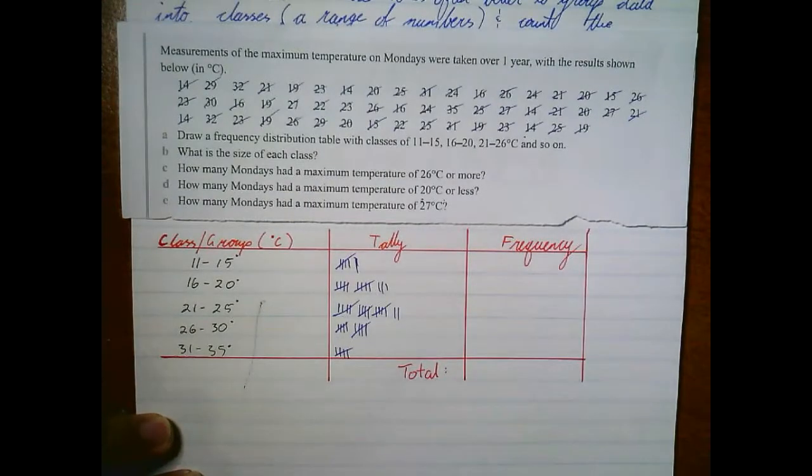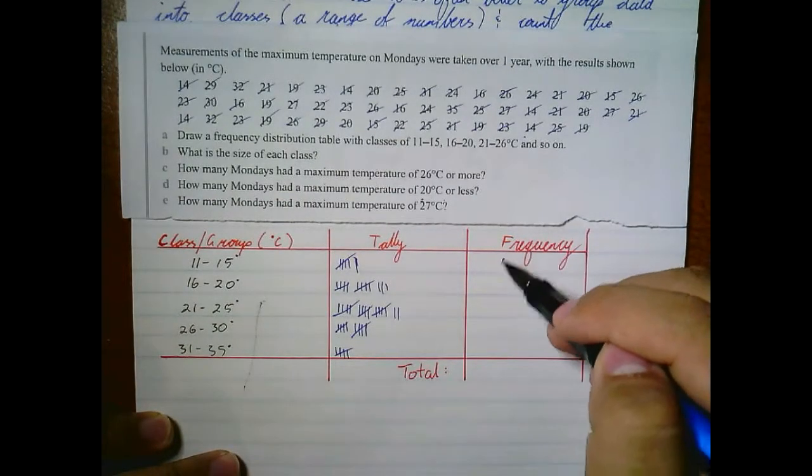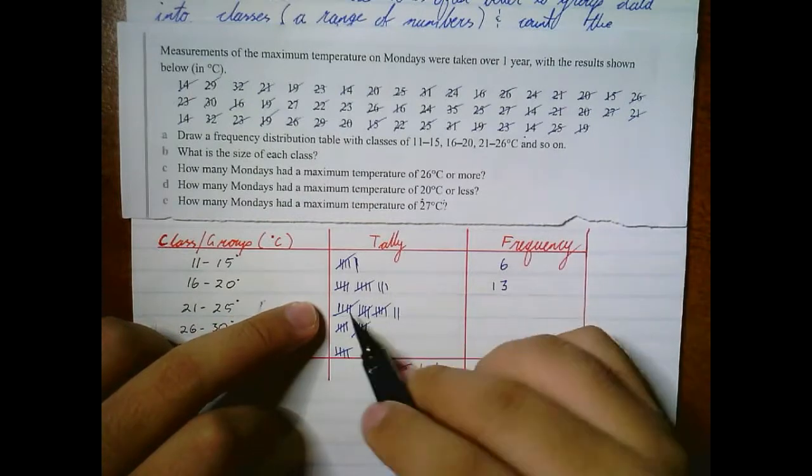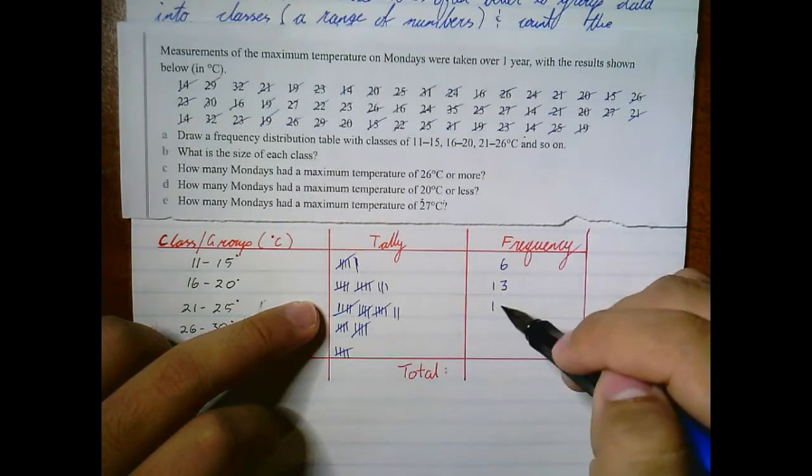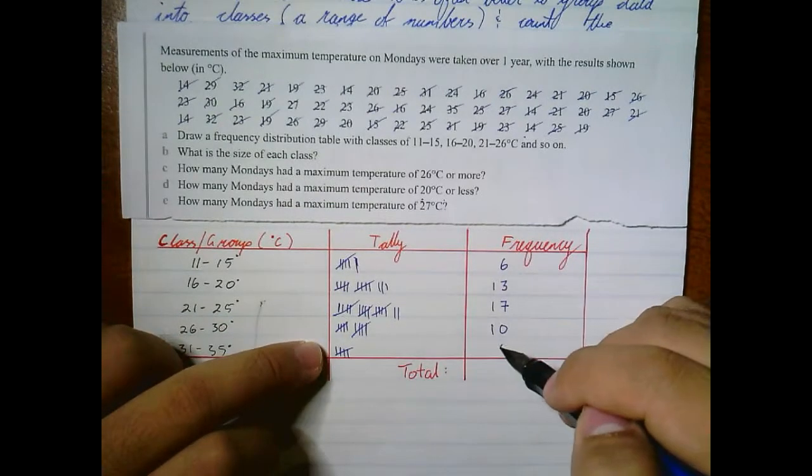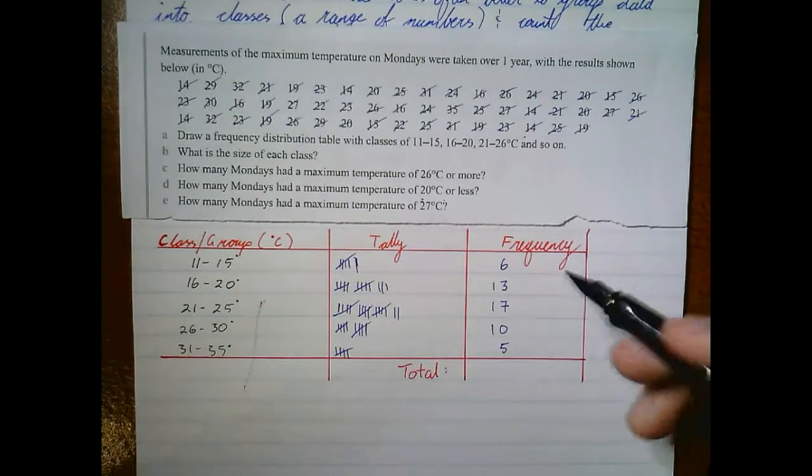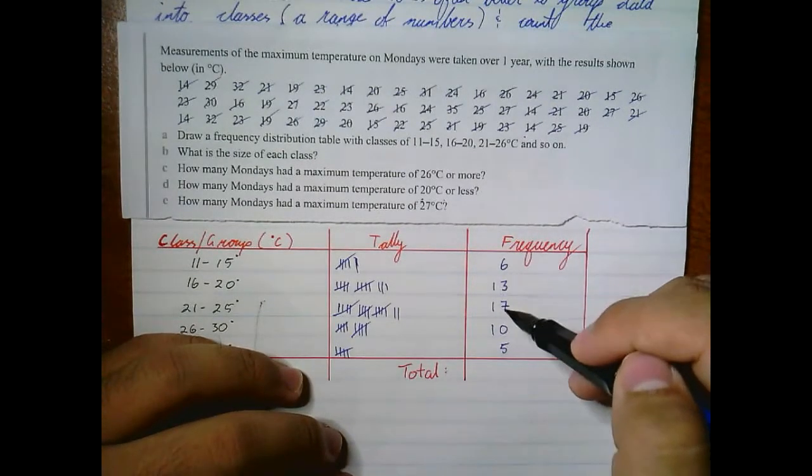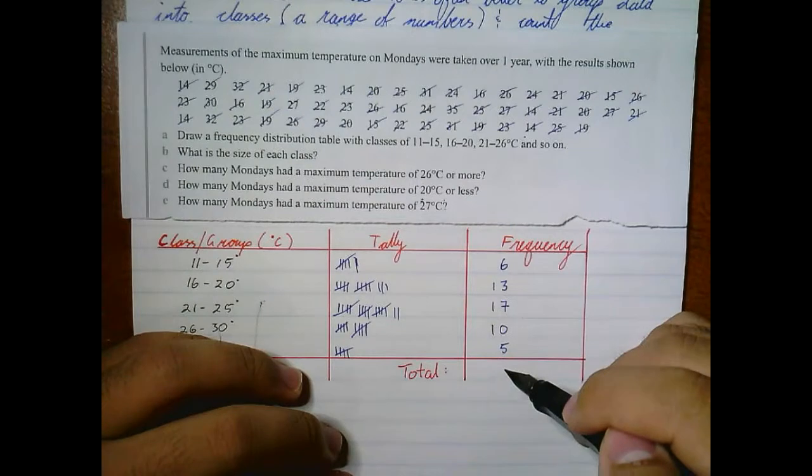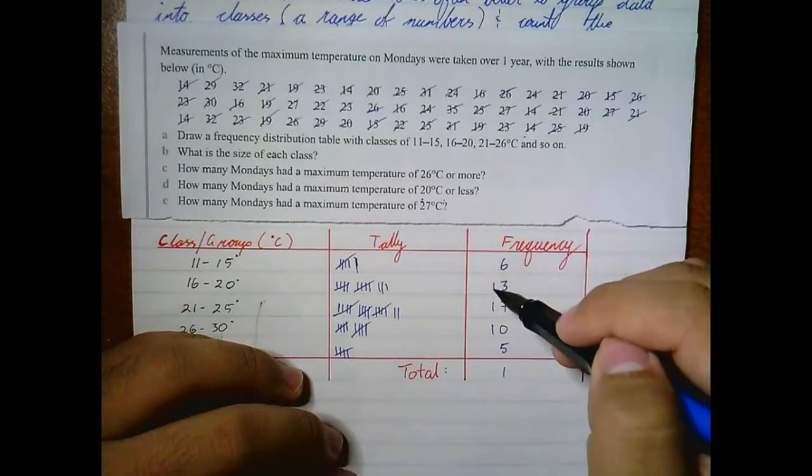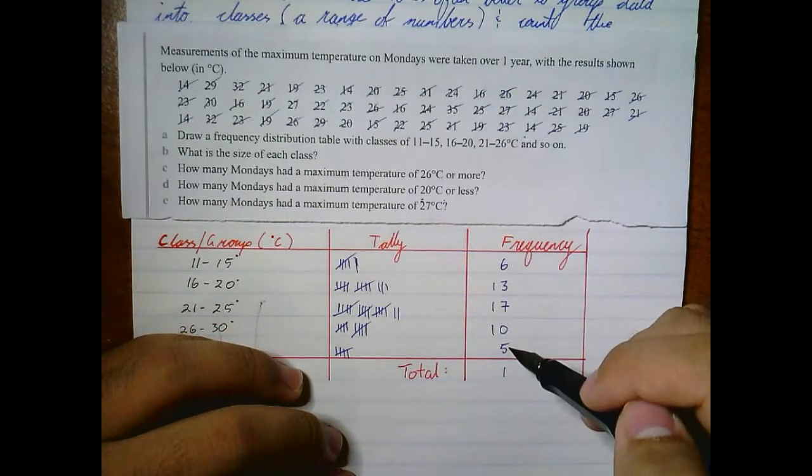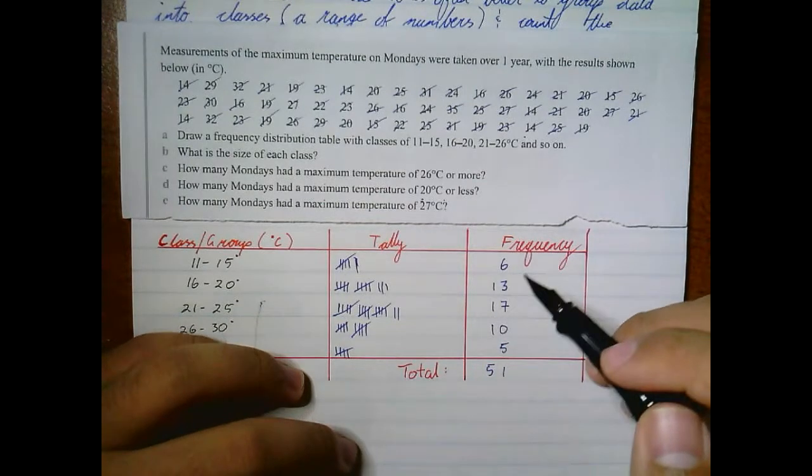And this will give us our final count. This is 6, this one here is 13, this is 5, 10, 15, that's 17, that is 10, and that is 5. Okay, so adding these up, that's 10, 3 and 7 make 10, plus 11 is 21, carrying the 2. 2, 3, 4, 5.